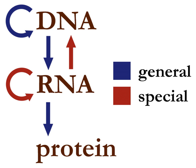RNA replication is the copying of one RNA to another. Many viruses replicate this way. The enzymes that copy RNA to new RNA, called RNA-dependent RNA polymerases, are also found in many eukaryotes where they are involved in RNA silencing. RNA editing, in which an RNA sequence is altered by a complex of proteins and a guide RNA, could also be seen as an RNA-to-RNA transfer.